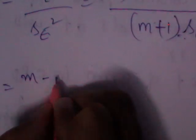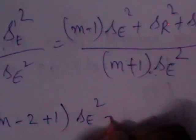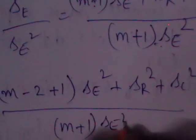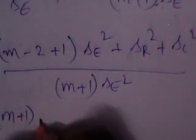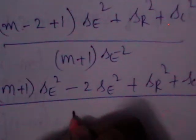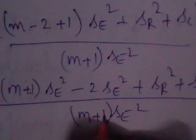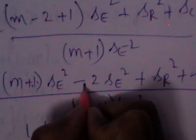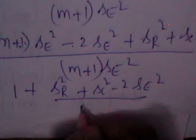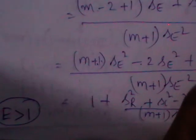To prove LSD efficiency, we write (M-1) as (M-2+1), giving [(M-2+1) S_e² + S_R² + S_C²] / [(M+1) S_e²]. Splitting the numerator, this becomes 1 plus [S_R² + S_C² - 2S_e²] / [(M+1) S_e²], which is a positive term. Therefore E is greater than 1, and we conclude that LSD is more efficient than CRD.